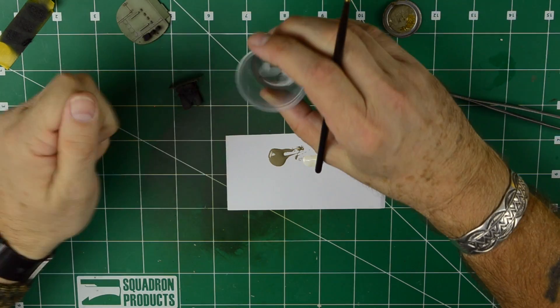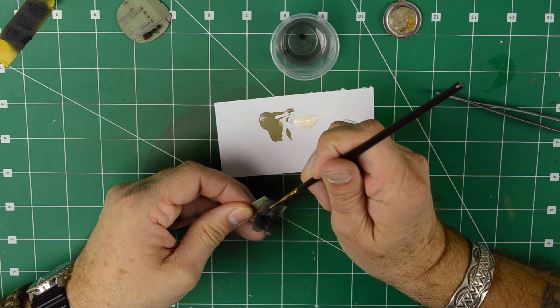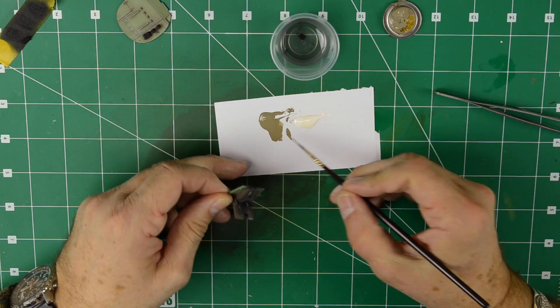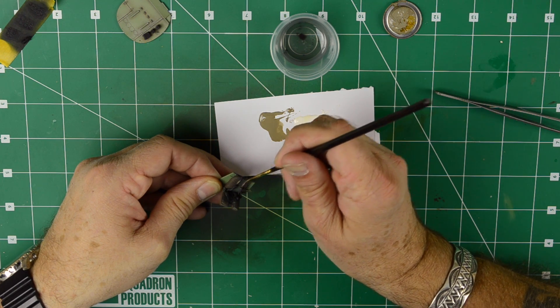Again we have our cup of enamel thinner and now we're just going to highlight. We're going to go over the webbing and the seat harnesses to make it lighter and create more depth every time.